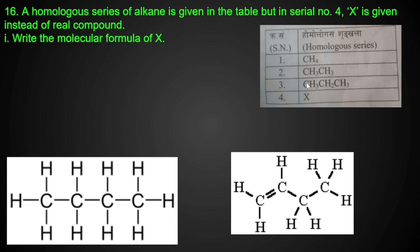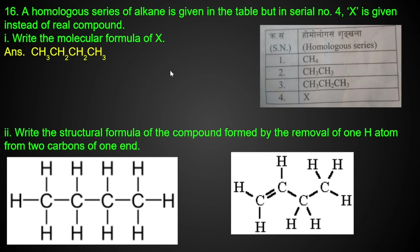The compound is formed by the removal of one H atom from two carbons of butane. The carbon forms a double bond. You can see in the figure: double bond carbon with hydrogen on one side and single bond on the other — this is the structural figure of but-1-ene.